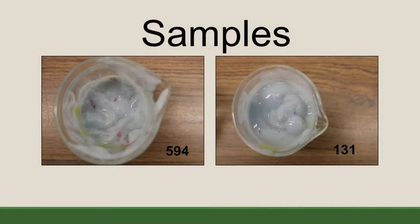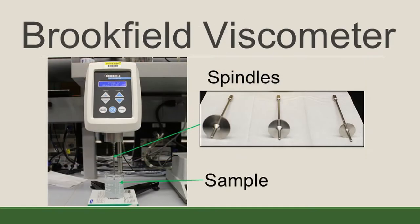After looking at our samples, we realized that both of them had hard chunks in them. So for all of our tests on the rheometers, we made sure not to include the chunks in the samples that were tested. Also, the samples for all the tests were run in triplicate. The samples were of similar color, and sample 594 seemed to have a higher viscosity, or more resistance to flow, than sample 131. So we started by testing the sample's viscosity on the Brookfield viscometer.